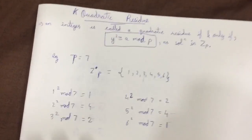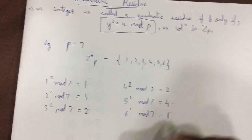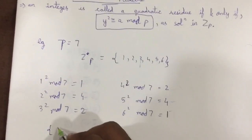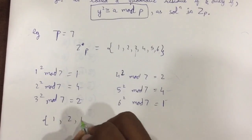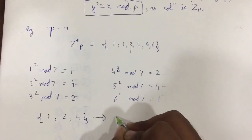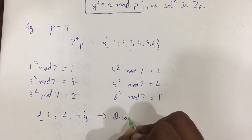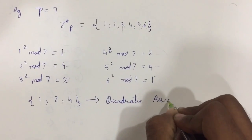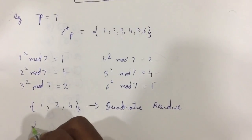So what quadratic residue says is that after solving this y² method, whatever values you get - that is 1, 2, and 4 - all these three values are considered as quadratic residue. And all the remaining values, that is 3, 5, and 6, those are considered as quadratic non-residue.